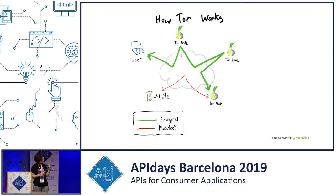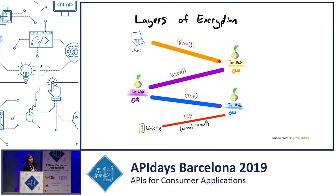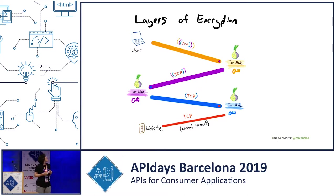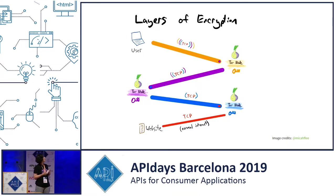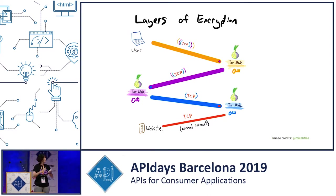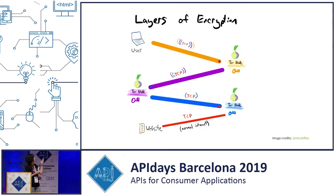From the Tor relay to the website, it depends on whether the connection is using HTTPS or not. Each request is encrypted three times inside the Tor network, encrypted with the public key of each relay along the path. When the user sends a data packet to the first node, that node peels away the first layer of encryption — only this node can decrypt that traffic. The destination is encrypted so it can't look at it, and it passes the packet on to the next node. Each subsequent node peels away one layer of encryption until it gets to the final node, which sends that data packet to some website out on the normal internet.